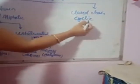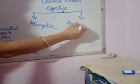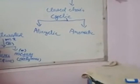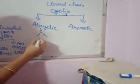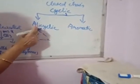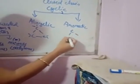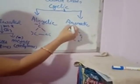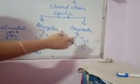Now come to closed chain — it is the cyclic chain. Here two types of compounds can be found: one is alicyclic, and another one is aromatic. In alicyclic compounds, the carbon atoms are linked in a ring but behave like open chain. Aromatic means it has a special ring structure — a benzene-type ring structure with alternating bonds. So compounds with this ring structure are considered aromatic compounds.